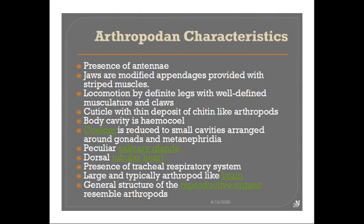The third character is locomotion by definite legs. We have seen that locomotion by peristalsis in Peripatus is an annelidan feature, but similarly locomotion in Peripatus also happens through appendages known as stump feet. Locomotion with the help of stump feet is a characteristic feature of Peripatus, relating it to locomotion by appendages in arthropods.